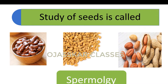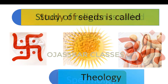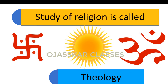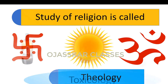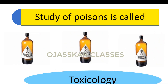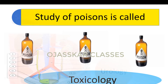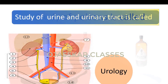Study of seeds is called Spamology. Study of religion is called Thesimology. Study of Poisons is called Toxicology. Study of urine and urinary tract is called Urology.